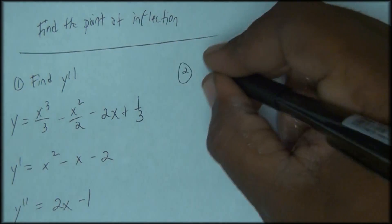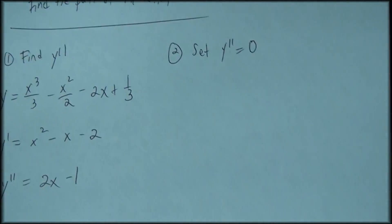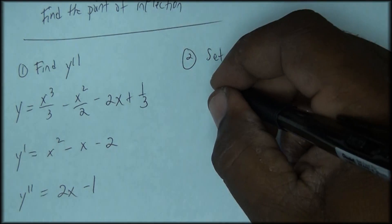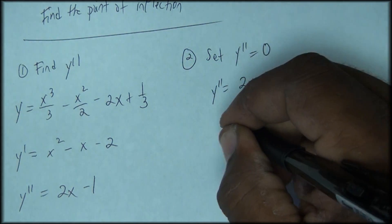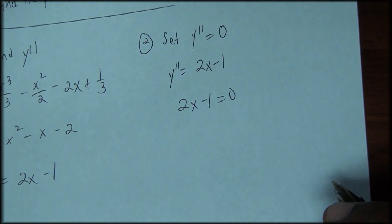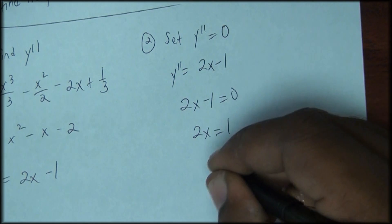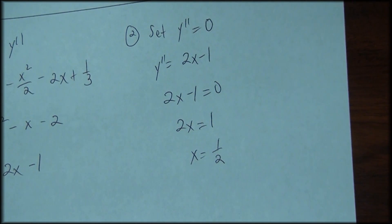We set the second derivative equal to zero. The second derivative is 2x minus 1, so we set 2x minus 1 equal to zero. Adding 1 and dividing by 2 gives us x equals one-half.